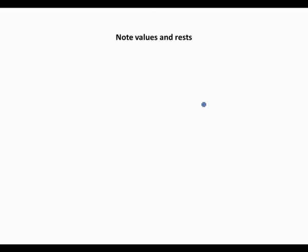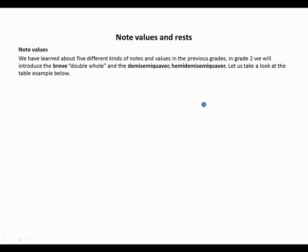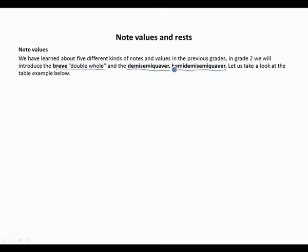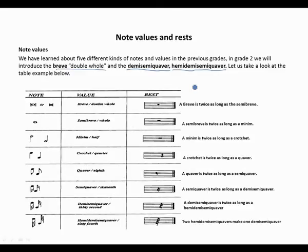Looking at note values and rests: from the five note values we introduced — the semi-brief, minim, crotchet, quaver and semi-quaver — we are going to add a breve, which is a double whole note, and also take a look at demi-semi-quavers and hemi-demi-semi-quavers. This is how a breve looks — the oval shape.